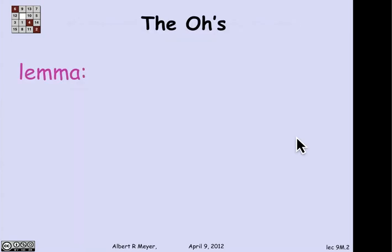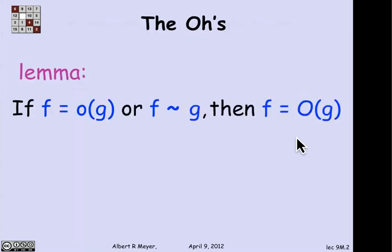An advantage of expressing the asymptotic notations in terms of limits is that a bunch of their properties then become immediately obvious. Here's one.